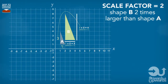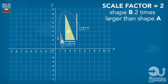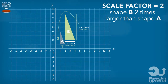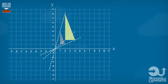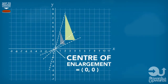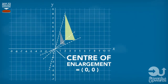The center of enlargement is always given a coordinate so we know where it is. To find the center of enlargement in an example where we don't know it, the first thing we need to do is join up all the corresponding corners with straight lines. As you can see, there is a point where all the lines intersect and cross over, and as you've guessed it, this is our center of enlargement.